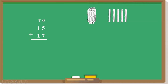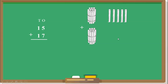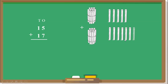For the number 17, at the 10's place there is 1, so again we take 1 bundle. At the 1's place there is 7, so we take 7 loose sticks: 1, 2, 3, 4, 5, 6, and 7.